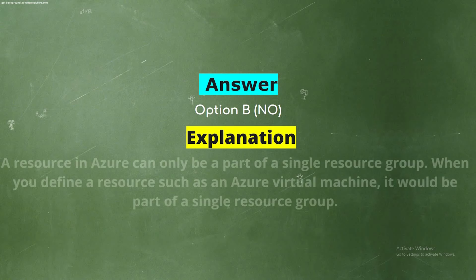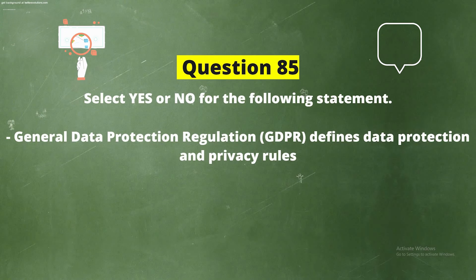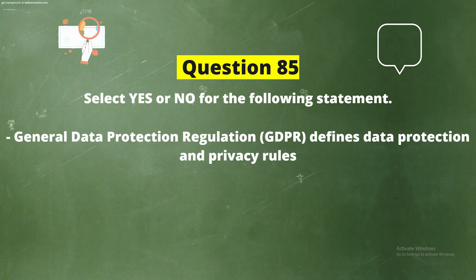Explanation: A resource in Azure can only be a part of a single resource group. When you define a resource such as an Azure virtual machine, it would be part of a single resource group.